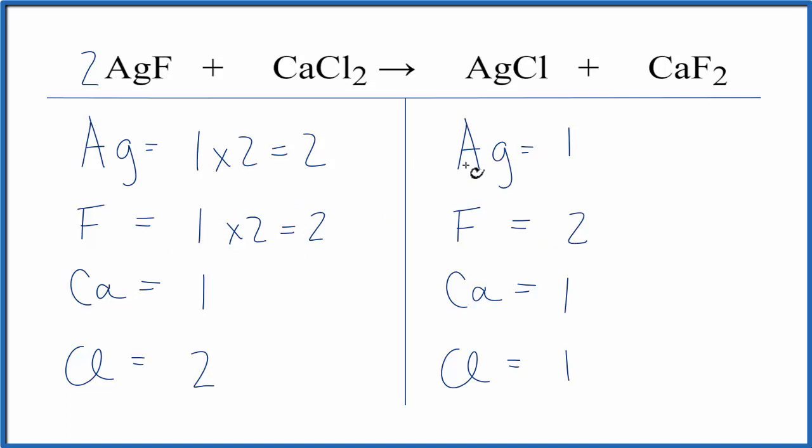Now the silvers are a little bit off. Let's fix the silvers. Put a coefficient of 2. So we have 1 times 2. That makes the silvers the same on both sides of the equation. And then the 2 applies to everything. So the chlorine, we have 1 times 2, that gives us 2 chlorines,